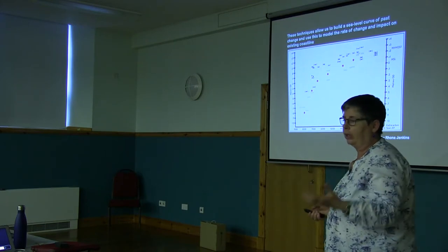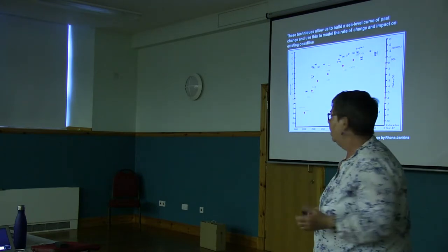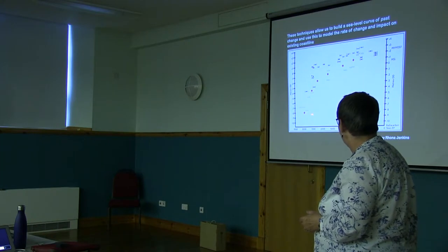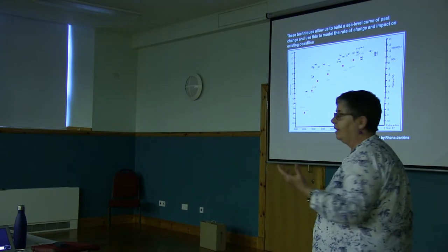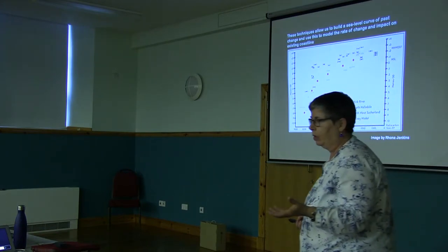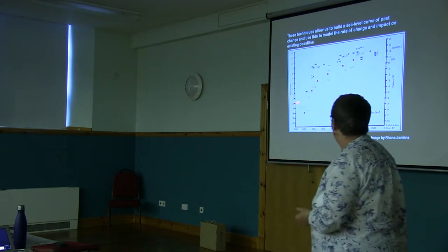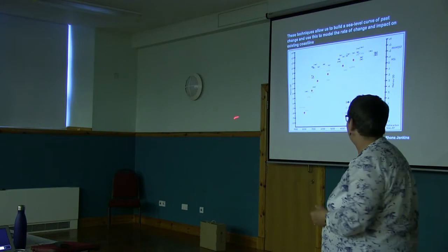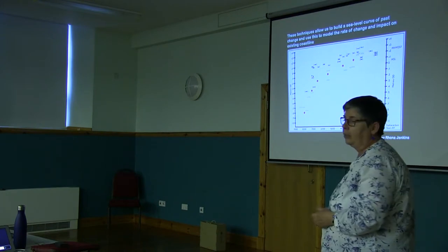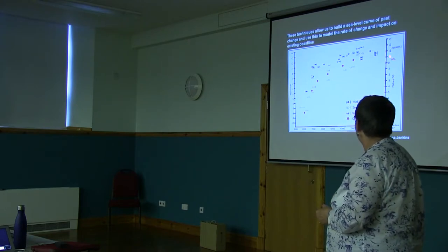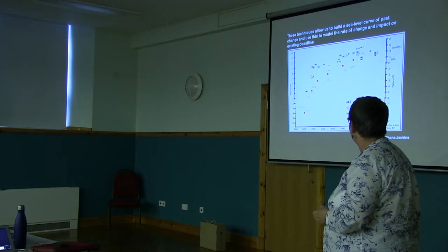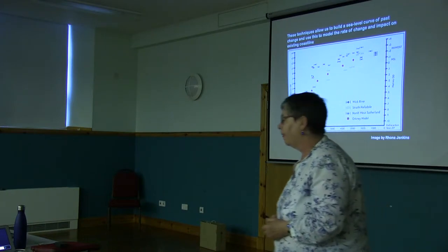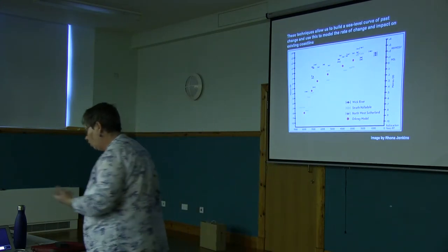By doing that, we can build up a chart of how sea level has changed in the past. This is one of the charts for Orkney — the red dots show past rising sea level since the end of the last ice age, and other dots relate to samples from the north coast of Scotland, putting Orkney in a Scottish context. Going back 8,000 years ago, sea levels were about 8 metres below present. There's a steep rise, then it tails off, reaching roughly present heights around 3,000 years ago.